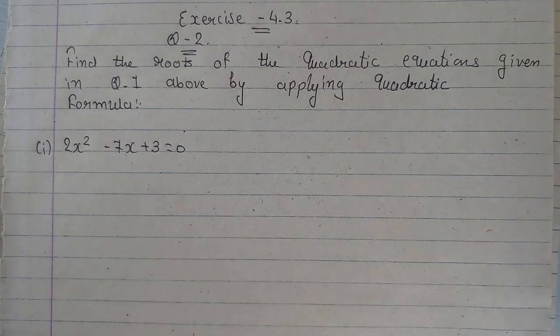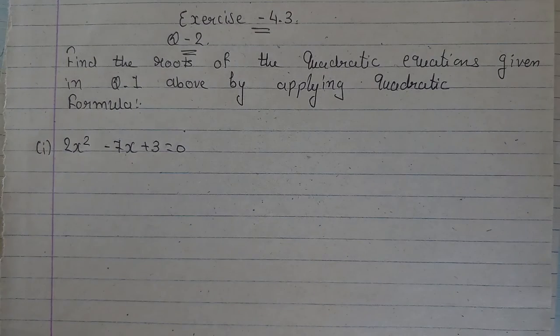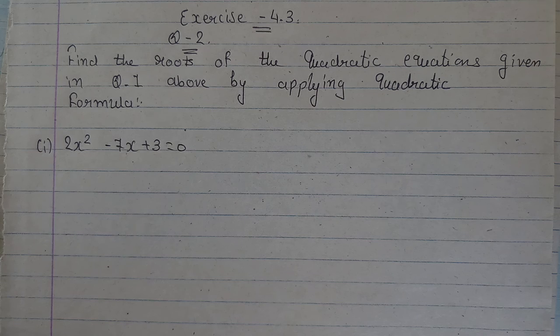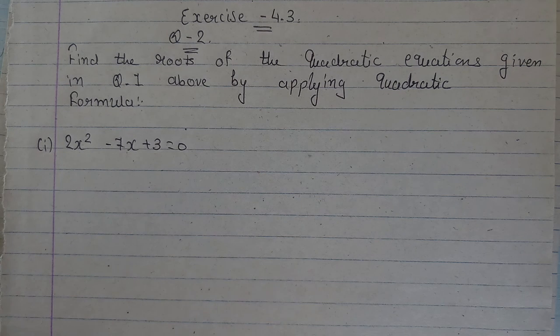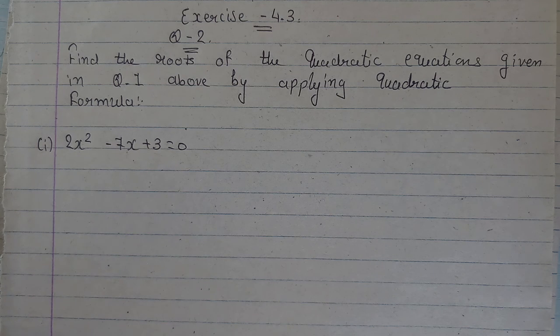We have here, like in the first question we have solved, which terms we have solved in the first question, we have to solve that question in this question. But the method will change. First, we have used the perfect square method, here we have to use the quadratic formula.